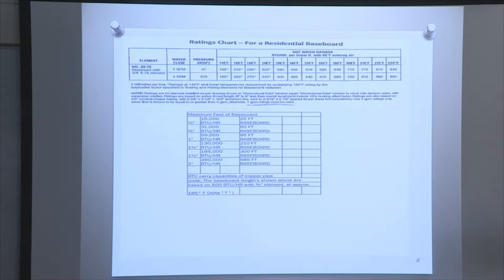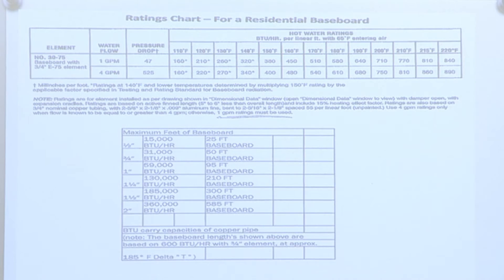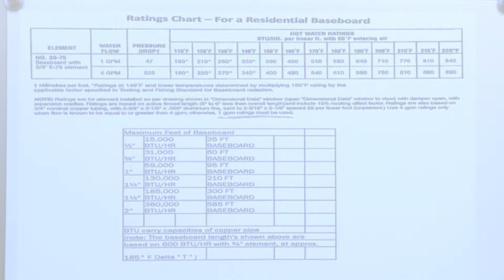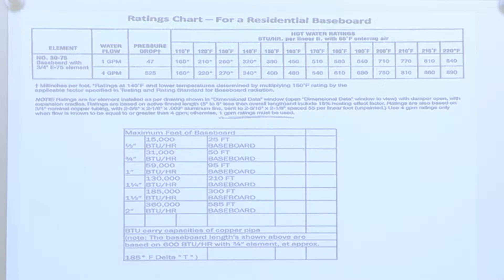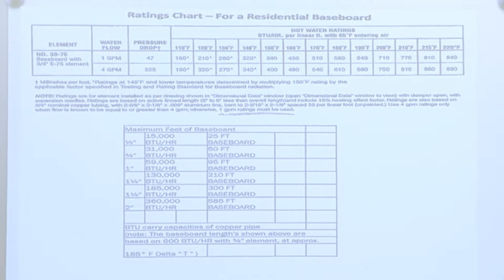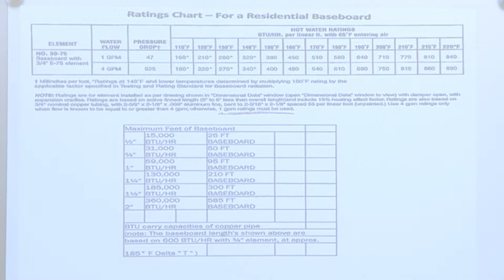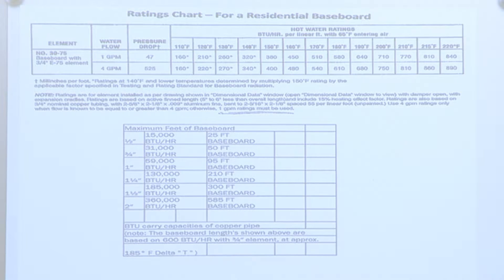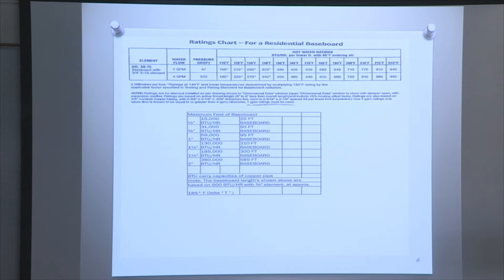Here's one of the rating charts. There are many of them — manufacturers have all different types. You can see the maximum feet of baseboard; for a half-inch pipe at 15,000 BTU, the maximum is 25 feet. The note at the bottom states that the baseboard lengths shown are based on 600 BTUs per hour with a three-quarter inch element at approximately 185 degrees delta T.